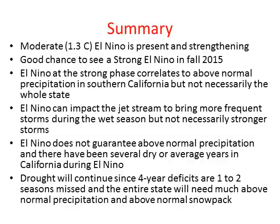Here are the summary bullets: Currently, El Niño conditions in the equatorial Pacific Ocean are present and strengthening, with a good chance of strong El Niño conditions by fall 2015. El Niño at the strong phase does not correlate well with Northern California but does correlate to above-normal precipitation for Southern California in winter months. El Niño can impact the jet stream and bring more frequent storms, but not necessarily stronger storms. El Niño does not guarantee above-normal precipitation — there have been several years with average El Niño conditions where average precipitation occurred in California, including Southern California. Drought will continue since four-year deficits are huge, with one to two seasons of precipitation missed across the entire state. We'll need much more precipitation to get rid of the drought.